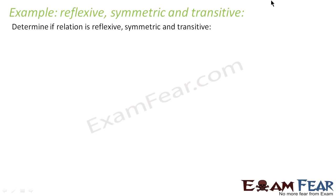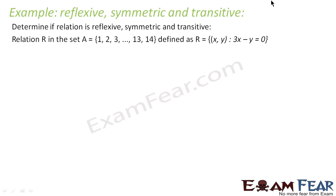The question says we have to determine whether the relation defined from set A — R(x,y) where 3x minus y equals 0 — holds true. We need to check whether this relation is reflexive, symmetric, and transitive. The first thing we have to do is find the elements, because R will be nothing but a subset of A × A.